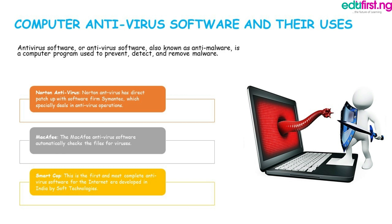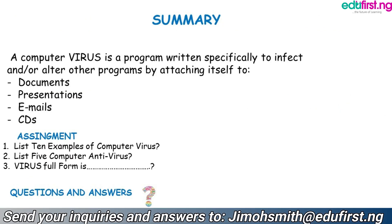Norton antivirus software is a product of the software firm Symantec, which especially deals in antivirus operations. Another one is McAfee — McAfee antivirus software automatically checks files for viruses. The next one is SmartCop — this is described as the first and most complete antivirus software for the internet era, developed in India by Soft Technologies. There are many more antivirus software options, but for this class we are focusing on these three.